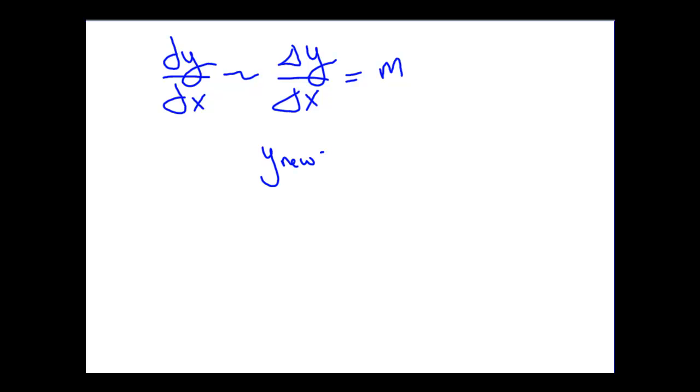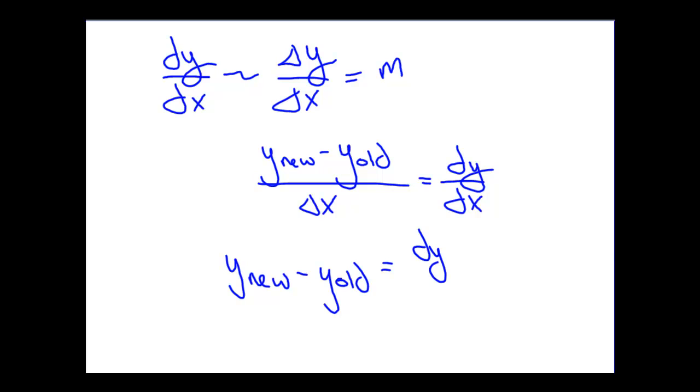So the way we're going to approach this problem is to think about delta y as the difference between the old and the new y values. And we're going to think of the slope here as the derivative, as our differential equation dy dx. So we can express this then as y new minus y old. The change in y values for our function are simply going to be the slope, which is given by the differential equation, times the change in x.